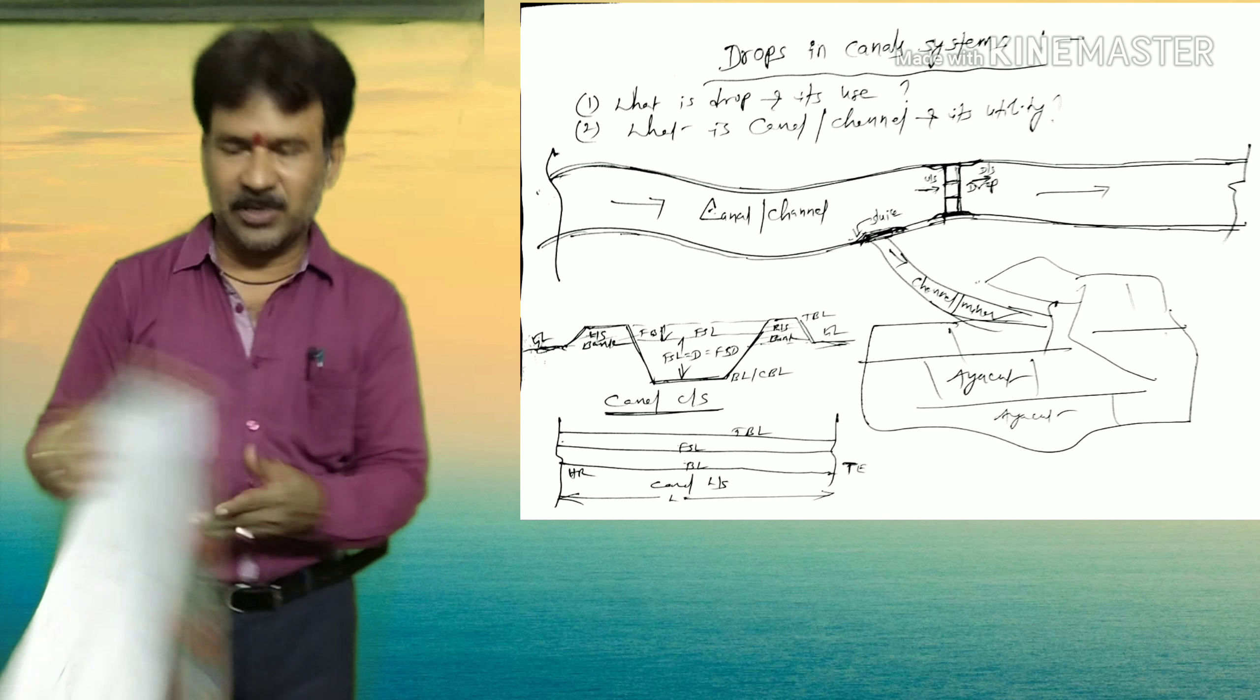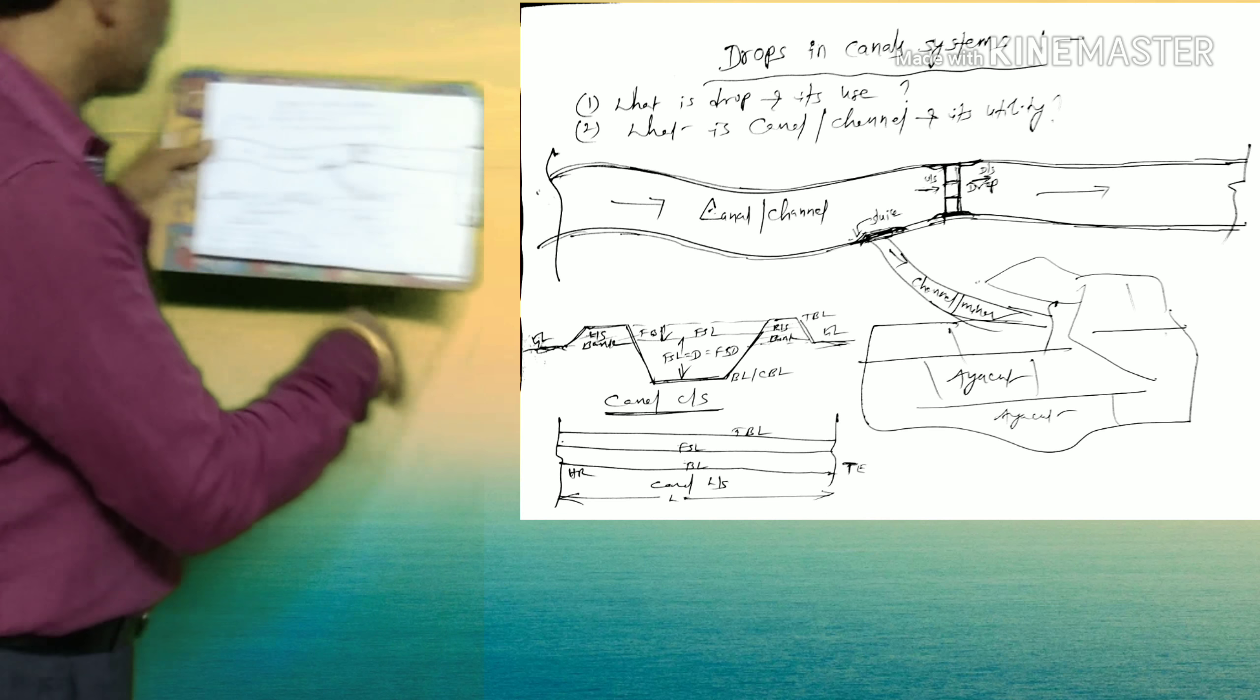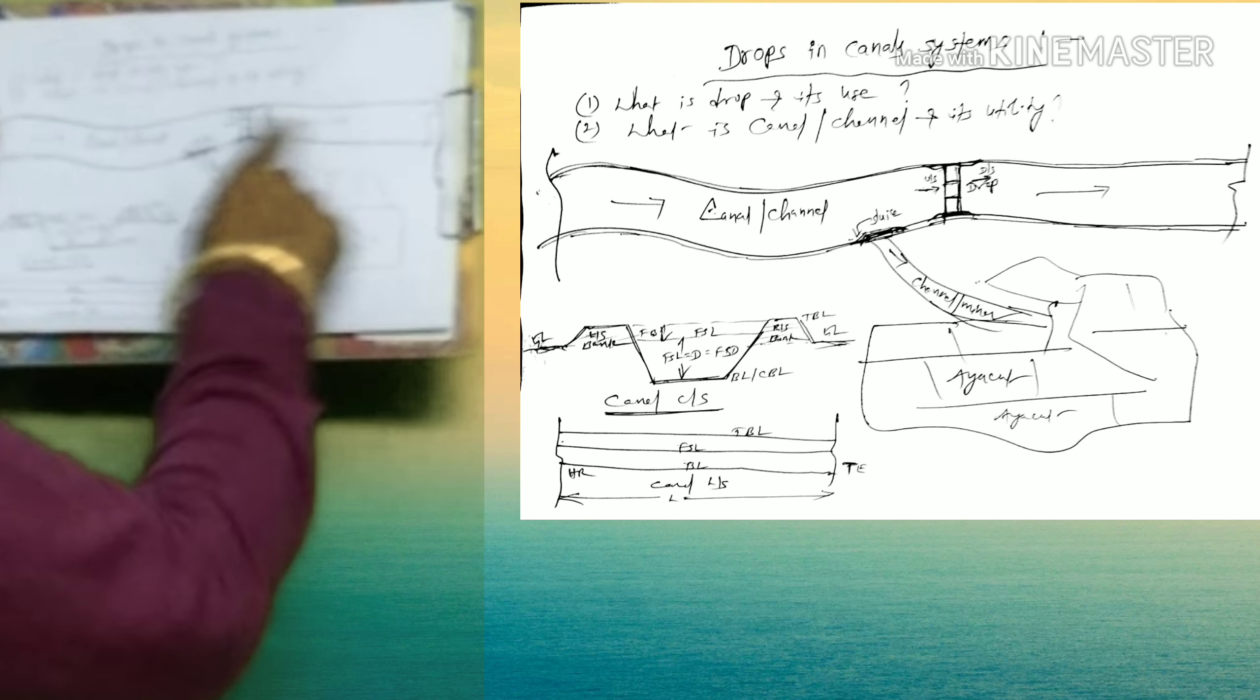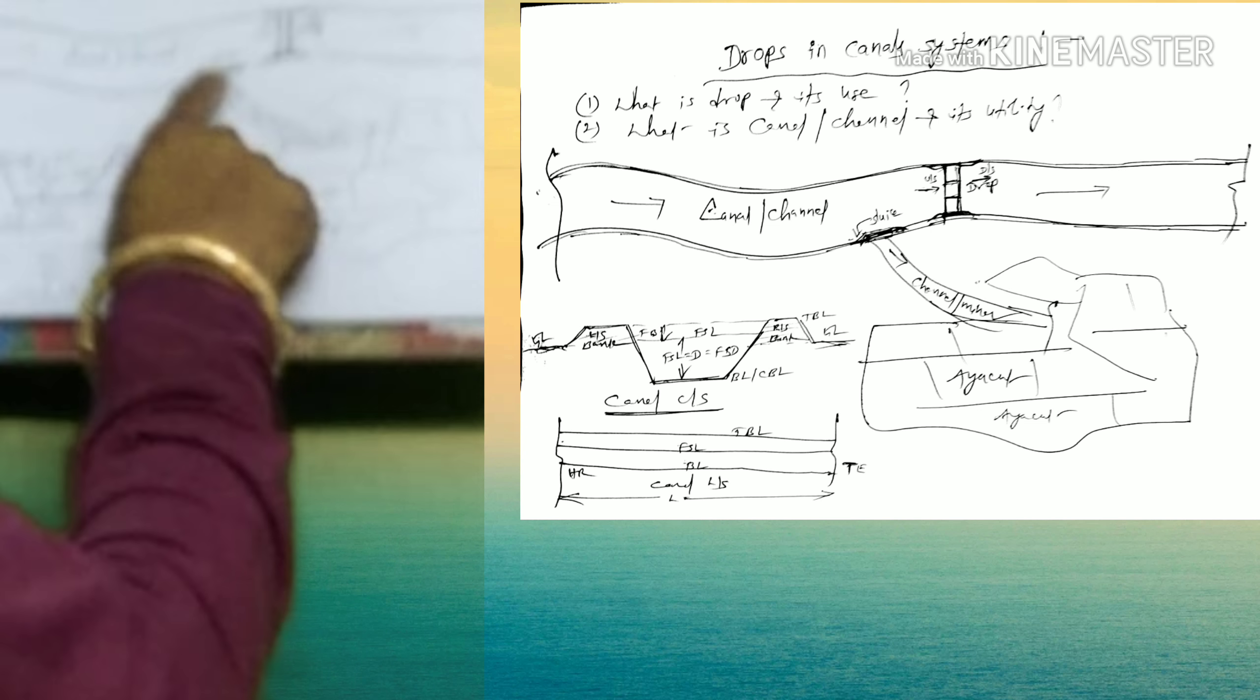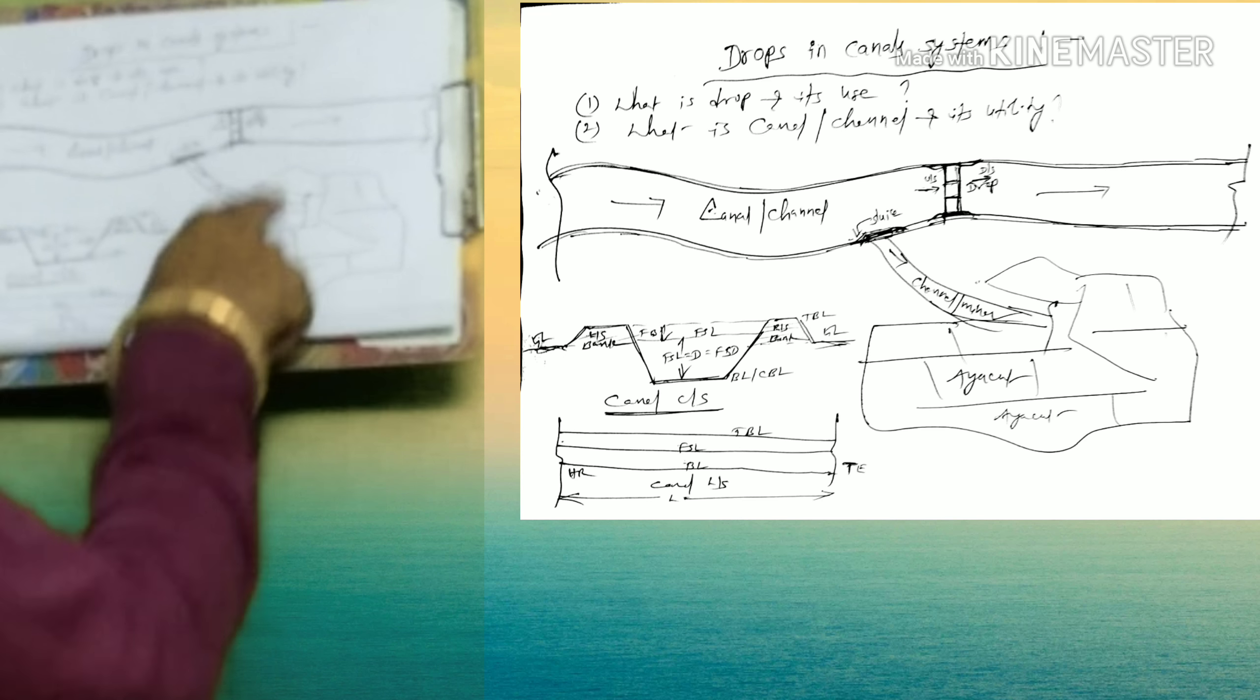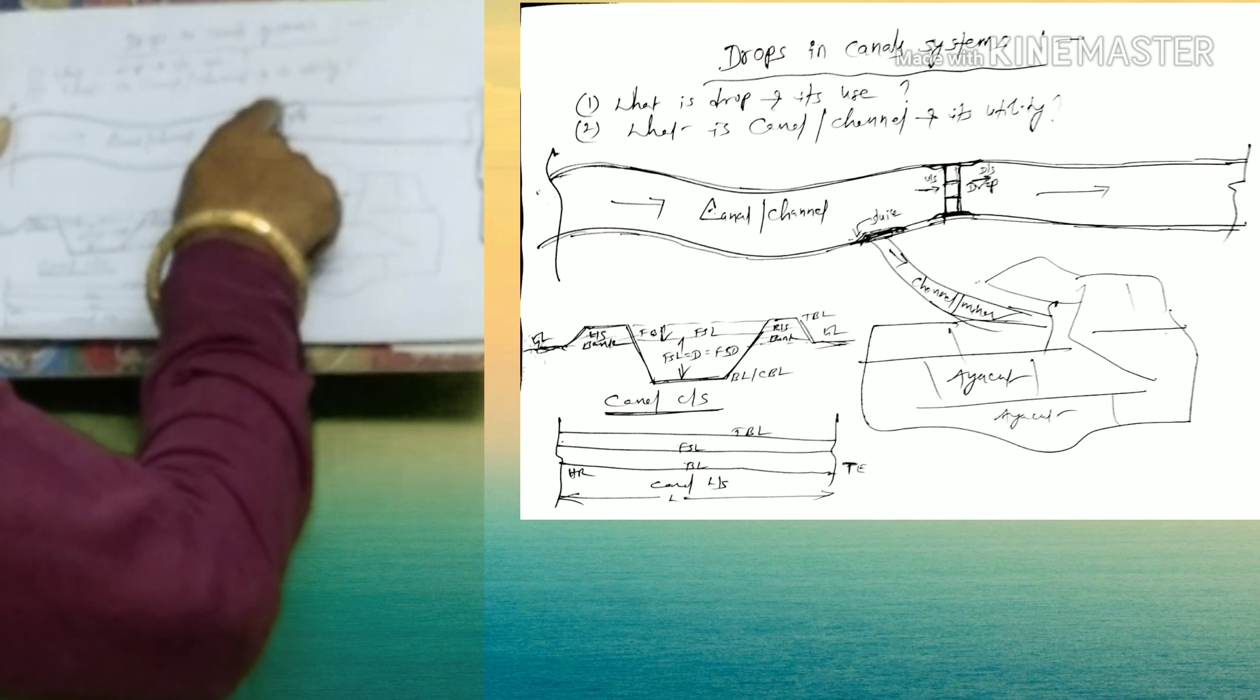For example, I will show you a map here. See the picture here, this is the canal system, this is the drop here. Here, a sluice is proposed to irrigate this area, this is the channel here.